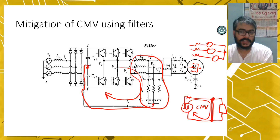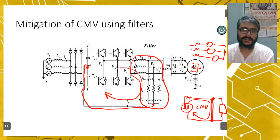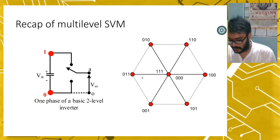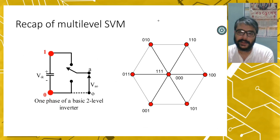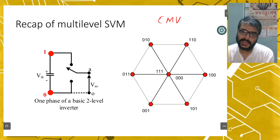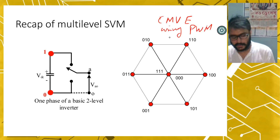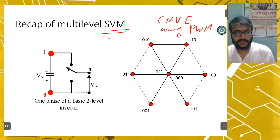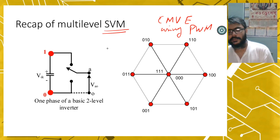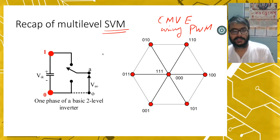The next approach is common mode voltage elimination using a PWM strategy — CMV elimination using PWM. To learn this, we need to revise multi-level space vector modulation (SVM). We will quickly revise space vector modulation and then go to common mode voltage elimination using pulse width modulation in three-phase systems.